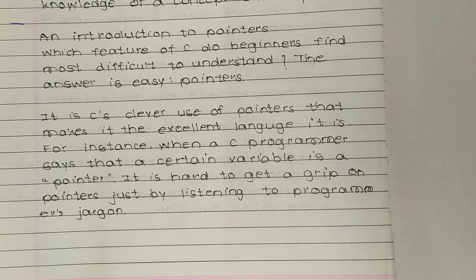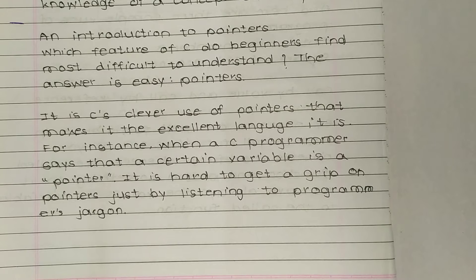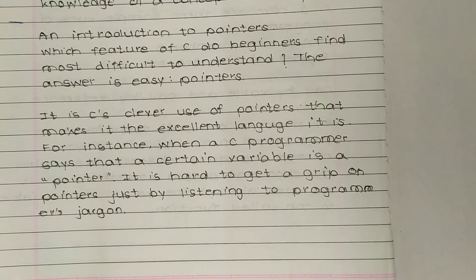An introduction to pointers. Which feature of C do beginners find most difficult to understand? The answer is easy: pointers. Pointers are a very difficult feature of C, but it is C's clever use of pointers that make it the excellent language it is — the efficient use of pointers is what makes C an excellent language.